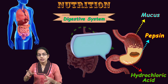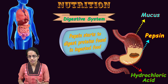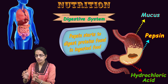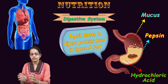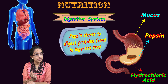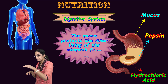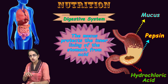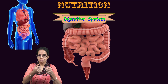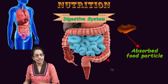As food enters, hydrochloric acid starts to act and this acidic medium facilitates the enzyme pepsin, which breaks down the protein present in the food. It is important to understand that the acid can destroy the lining of the stomach, and therefore mucus is present to prevent damage to the stomach wall. The simplified food particles then move to the small intestine.